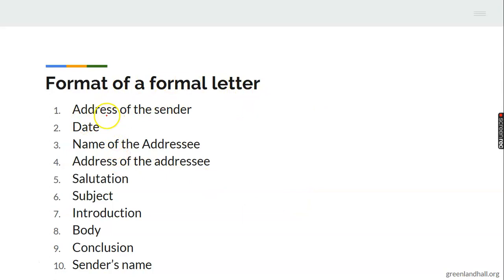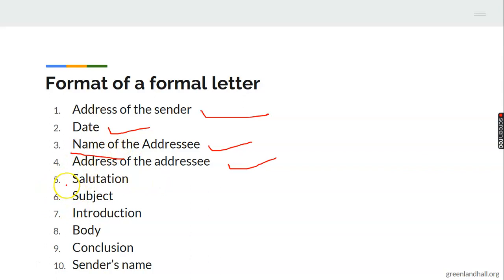Now let's look at the format of a formal letter. You have the sender's address followed by the date, then the name and address of the addressee — that is, the office of the receiver — then the salutation, the subject heading, the introduction, the body, the conclusion, and finally the sender's name.